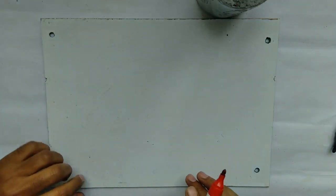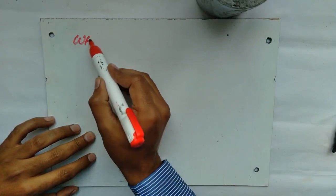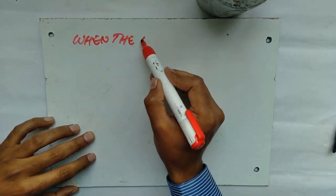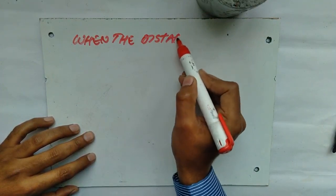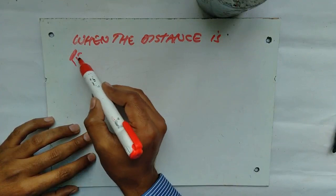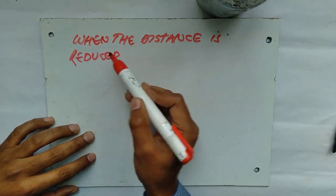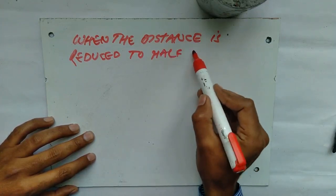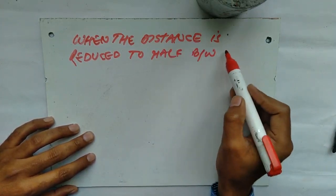When the distance is reduced to half, reduced to half between two bodies.